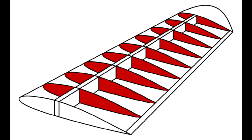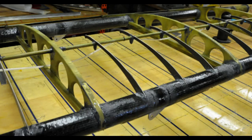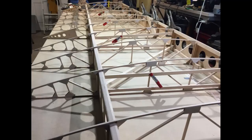Ribs are the structural cross pieces that combine with spars and stringers to make up the framework of the wing. They usually extend from the wing leading edge to the rear spar or to the trailing edge. The ribs give the wing its cambered shape and transmit the load from the skin and stringers to the spars. Similar ribs are also used in ailerons, elevators, rudders, and stabilizers. Wing ribs are usually manufactured from either wood or metal. Aircraft with wood wing spars may have wood or metal ribs, while most aircraft with metal spars have metal ribs.